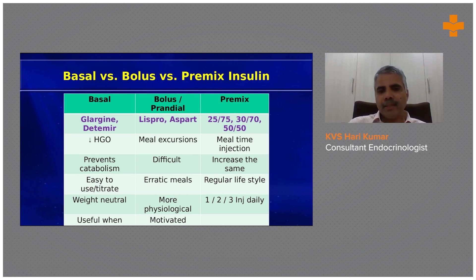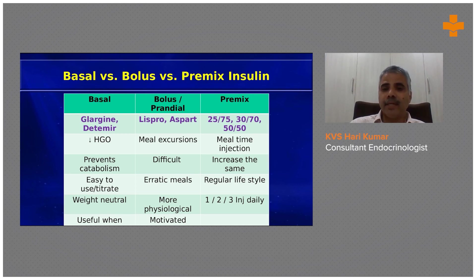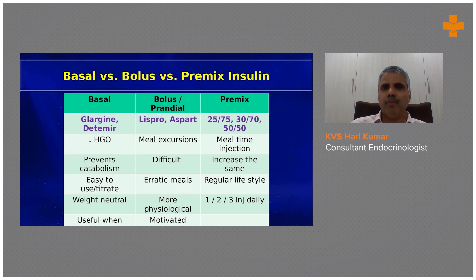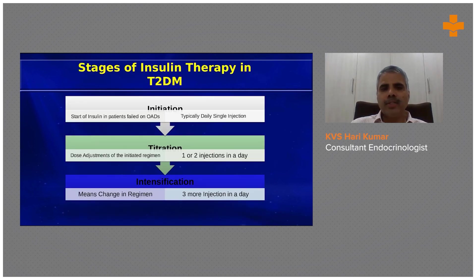Pre-mix insulins come in ratios such as 25/75 and 30/70 — these are meal-related injections requiring a regimented lifestyle with a regular, predictable eating pattern. The convenience is that it's only a single injection, which can be given once or twice daily, giving patients more ease of administration.